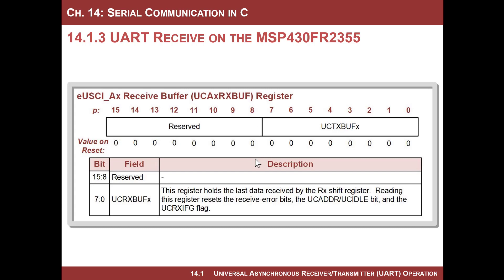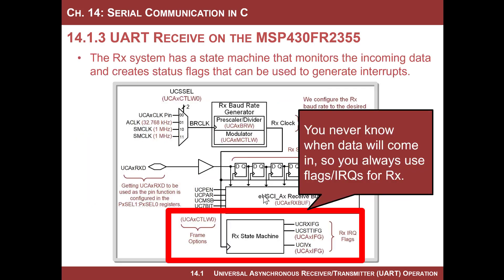The receive buffer is just a register. It's 16 bits, but the upper 8 bits aren't used. The lower 8 bits are where you see the receive data, and you just read from it. Whenever you want to read from it, you store it to a variable, and when you do that, it resets a whole bunch of bits — the error bits and the flag.